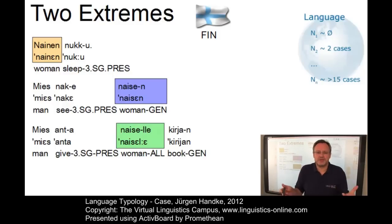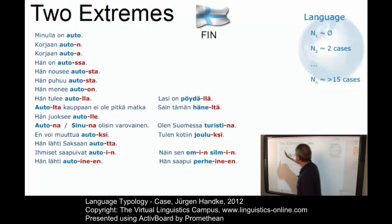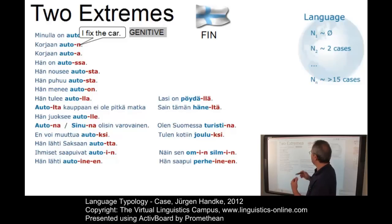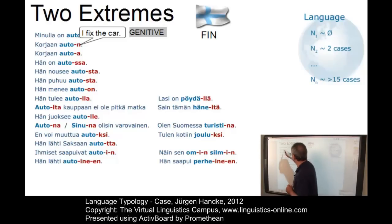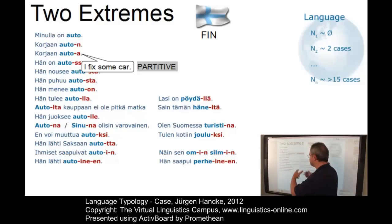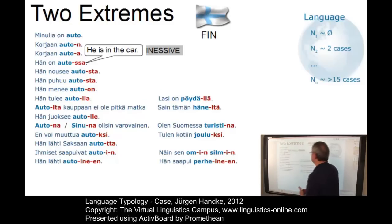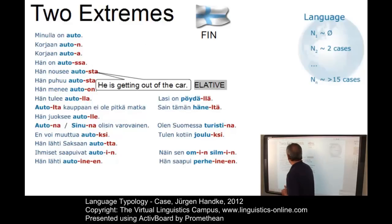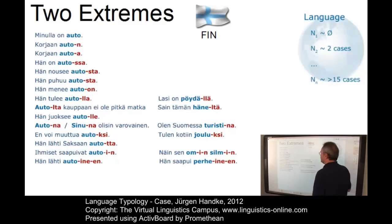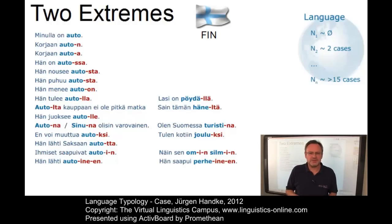This case system is even more complex if we take cases that define not only syntactic functions but semantic relationships, such as the partitive. Koryan auton means 'I fix the car' using the genitive, while koryan autoa, 'I fix some car', uses the partitive — a different morphological structure. 'He is in the car' is marked as the inessive, a locative relationship. And autostar, 'he is getting out of the car', is the so-called elative case. Finnish is extremely complex as far as its case system is concerned.